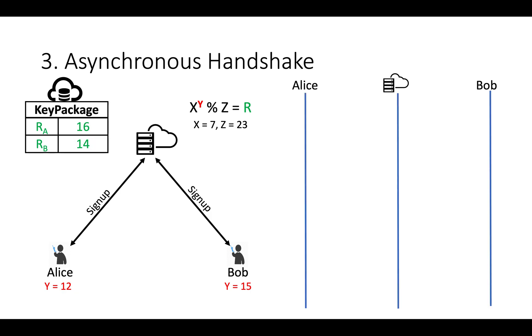Let's see how handshaking happen. Day 1, Bob is offline. Alice asks Bob key package from server. Server return key package of Bob. Using Bob's public info and own secret, Alice derive a key. Using this key, encrypt message and send it to server.